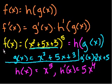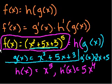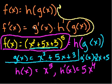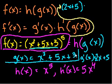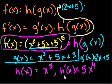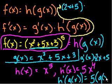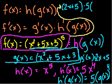So the chain rule says the derivative of this entire composite function is just g prime of x, which we found is 2x plus 5, times h prime of g of x. h prime of x is 5x to the fourth, but we want h prime of g of x. So h prime of g of x equals 5 times g of x to the fourth, and we know g of x is x squared plus 5x plus 3. So f prime of x equals 2x plus 5 times 5 times (x squared plus 5x plus 3) to the fourth power.